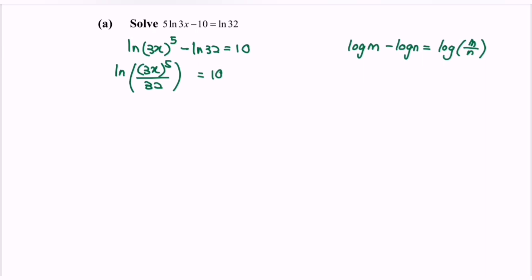As we know, 32 equals 2^5, so we have ln((3x)^5 / 2^5).